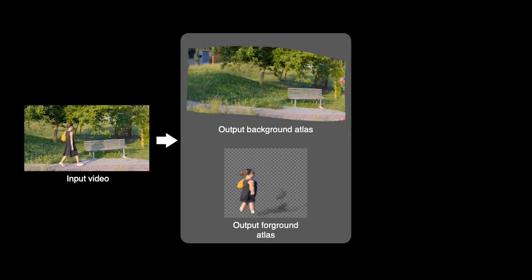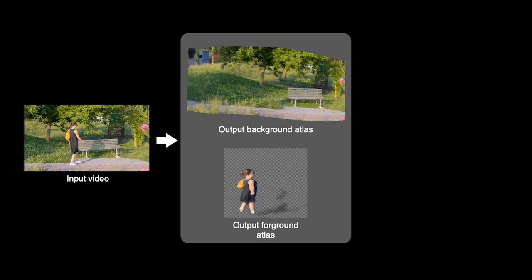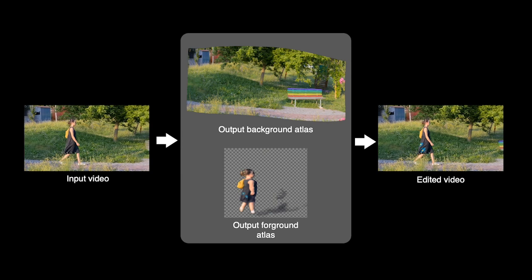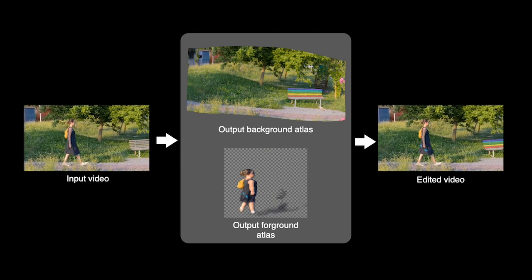Our method works by decomposing an input video into a set of layered 2D atlases. Each video position is mapped onto the atlases, which provide a unified representation of the video. This allows us to perform video editing by directly editing the atlases and then mapping them back to the original video in a consistent manner.